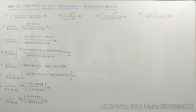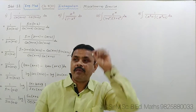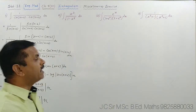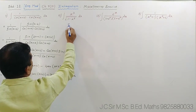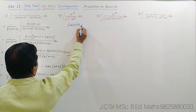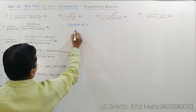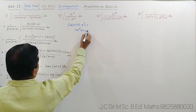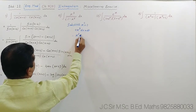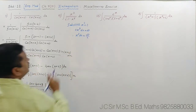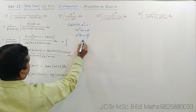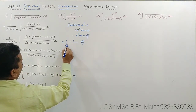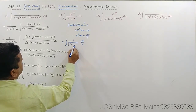Question number 12. Looking at this sum, you can see x³ is the derivative of x⁴ — that you know. x³ is the derivative of x⁴, so substitution will be used here. Let x⁴ = t. By differentiating, 4x³ dx = dt, therefore x³ dx = dt/4. Putting all the values: integration becomes dt/4 · 1/√(1−t²).